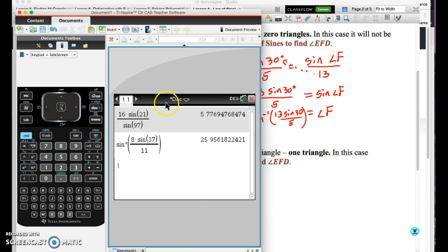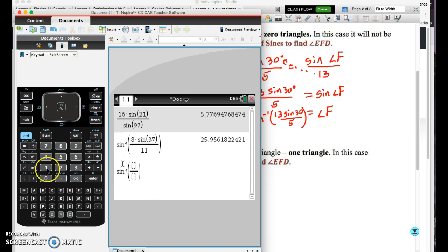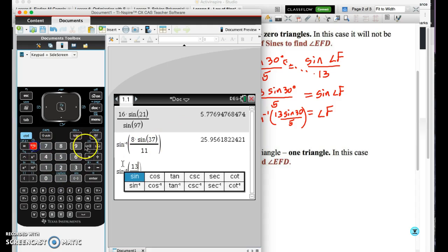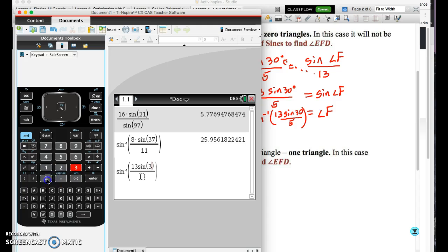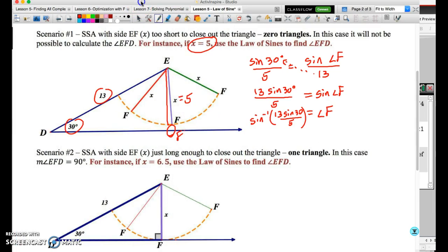Now what we're going to do is we're going to go ahead and we're going to enter that into the calculator. Let me pull up my calculator. And what I'm going to be entering is pretty much the same calculation as before. So I need sine to the minus 1. I'm going to use my fraction button over here. 13 multiplied by sine of 30 degrees. And then I'm going to divide by 5. And when I enter, what you'll see is your calculator yields an answer undefined.